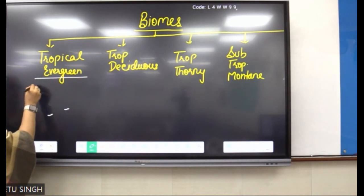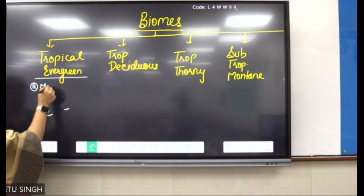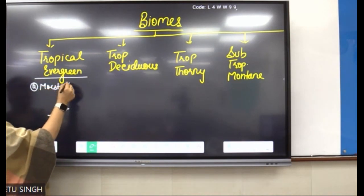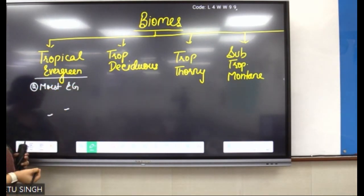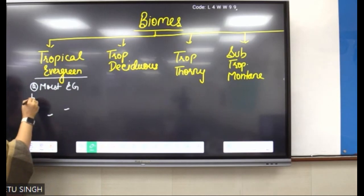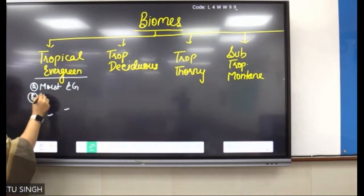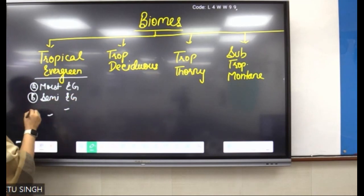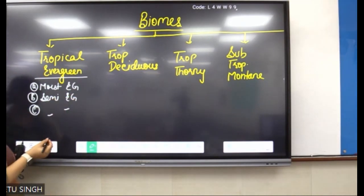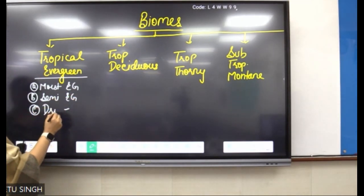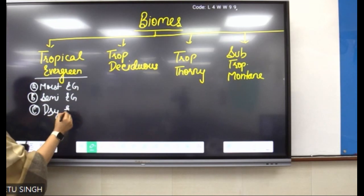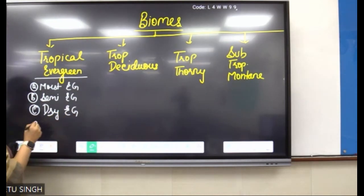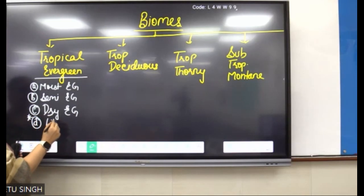Tropical Evergreen has four subcategories: A — Moist Evergreen; B — Semi-Evergreen; C — Dry Evergreen; and D — with a star mark — Littoral.